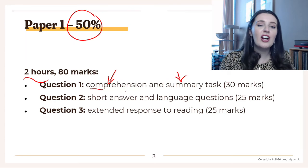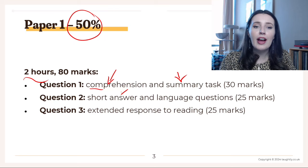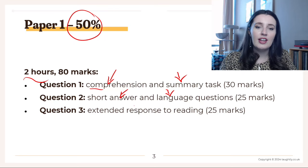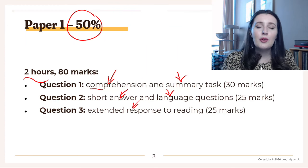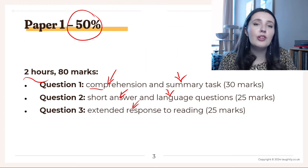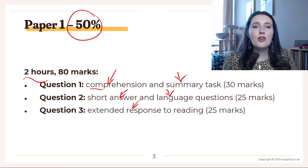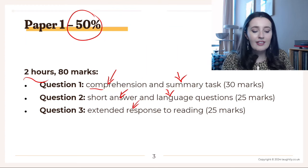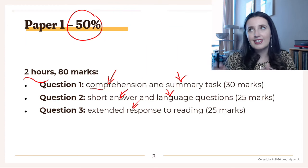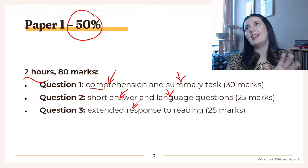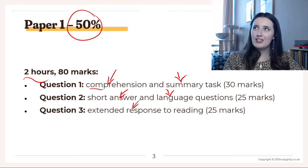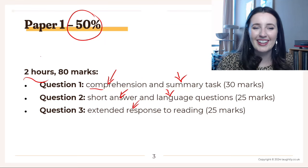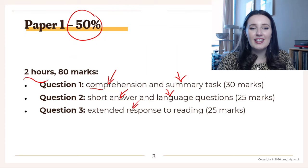After that you answer more short answer questions that are more vocabulary focused, then the writer's effect language analysis question. Finally, the big question in Paper One is the extended response — you read a longer text, usually a narrative, and extend some ideas into a diary, a letter, a newspaper, a magazine, a formal report, a speech or an interview.